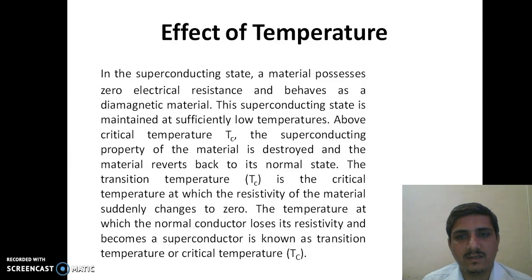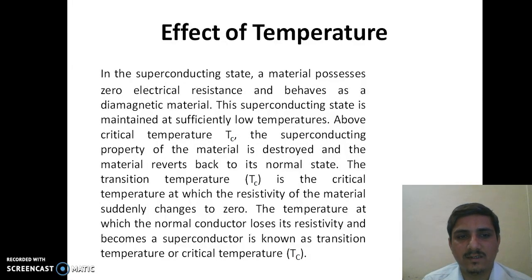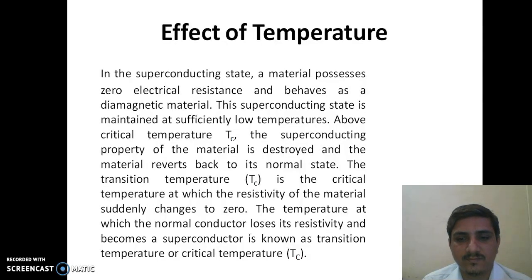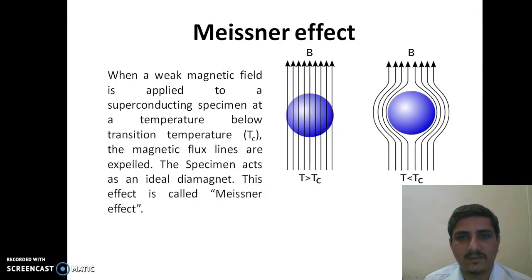In the superconducting state, a material possesses zero electrical resistance and behaves as a diamagnetic material. This superconducting state is maintained at sufficiently low temperatures. Above the critical temperature Tc, the superconducting property is destroyed and the material reverts to its normal state. The temperature at which the normal conductor loses its resistivity and becomes a superconductor is known as the transition temperature or critical temperature.